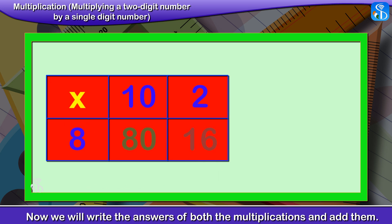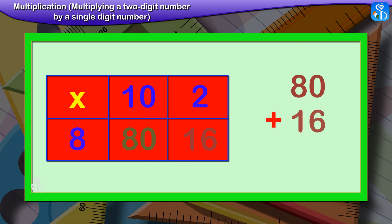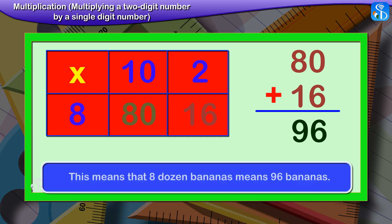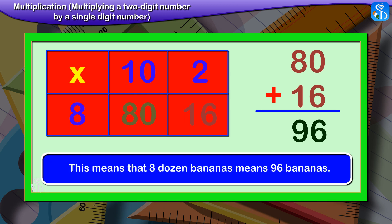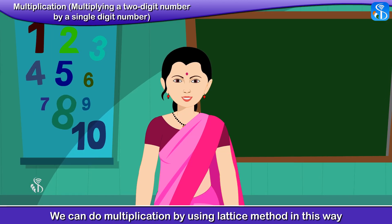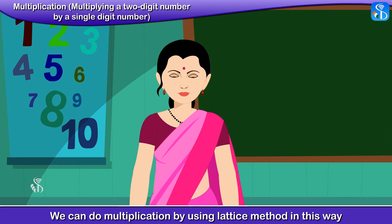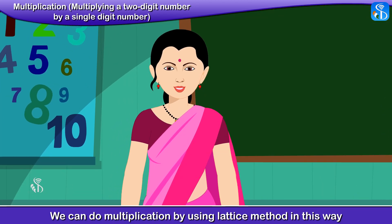Now, after multiplying 10 by 8 and 2 by 8, the answers are written aside and then we add them. Therefore, 80 plus 16 is equal to 96. This means that 8 dozen bananas means 96 bananas. We can do multiplication using the lattice method in this way.